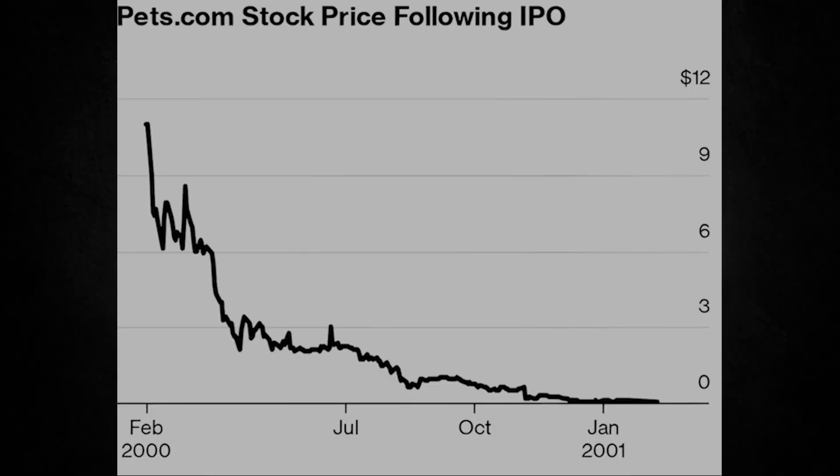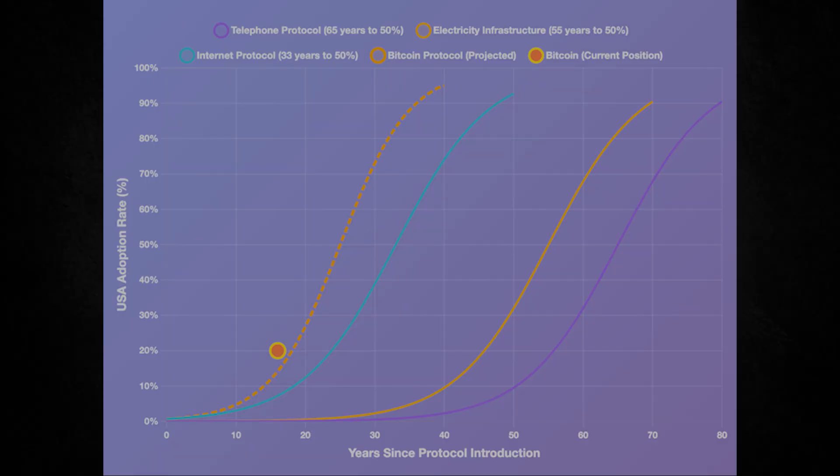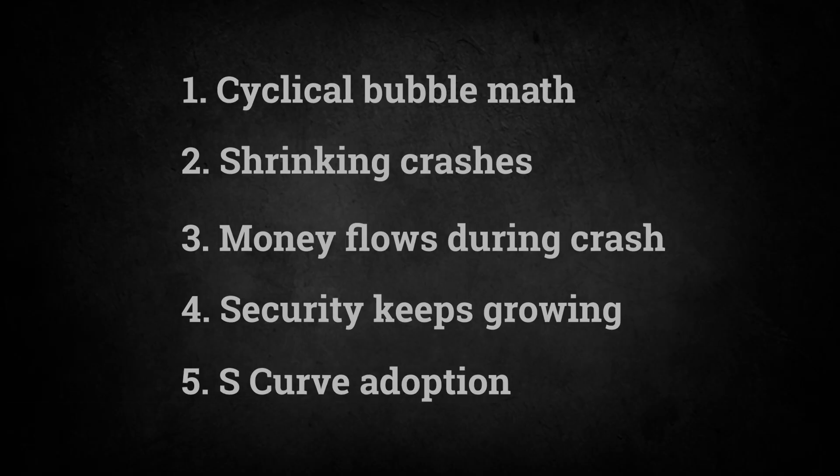Real bubbles don't follow S-curves — they spike and then disappear forever. Tulip mania, Pets.com, Bear Stearns: they all collapsed and never recovered because they had no real utility driving adoption. Bitcoin keeps recovering to new highs because it's following the adoption curve of a revolutionary protocol, not the collapse pattern of a speculative bubble. So the fifth mathematical proof: it follows the S-curve of tech adoption. If this S-curve is right, like all previous ones, we have maybe five to ten years before Bitcoin hits 50% adoption in developed countries. After that, the easy gains are over.